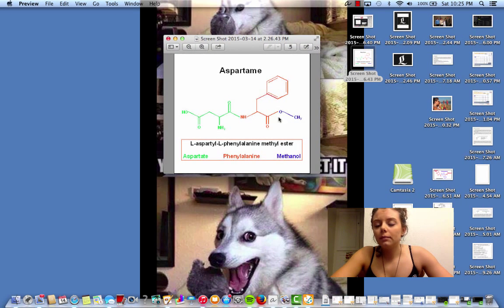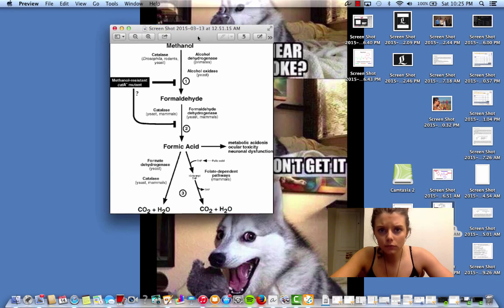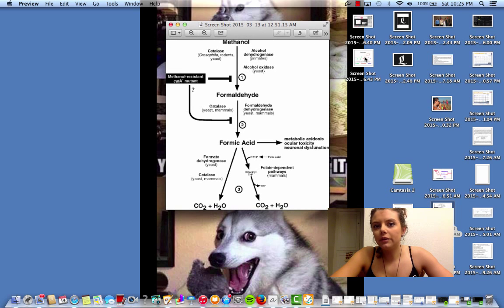Now, this methanol group is what releases the toxic compounds. The toxic compounds that are released or created by methanol is found by this pathway. So methanol comes off of aspartame in your body.